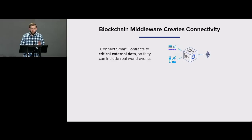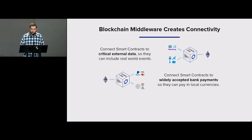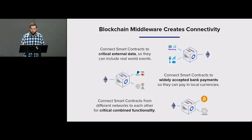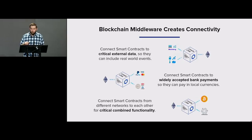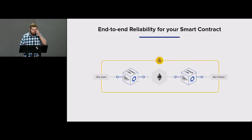The solution to providing contracts with this very necessary data is basically blockchain middleware. Blockchain middleware is responsible for taking data from the external world and securely providing it to contracts for them to act on. Likewise, blockchain middleware also creates connectivity to external payment mechanisms — whether that's traditional retail or institutional payments, or if those payment mechanisms or other contracts are on other chains. For example, if you wanted an Ethereum contract to pay in Bitcoin, you would need something like Chainlink as blockchain middleware to sign and broadcast the relevant transactions.